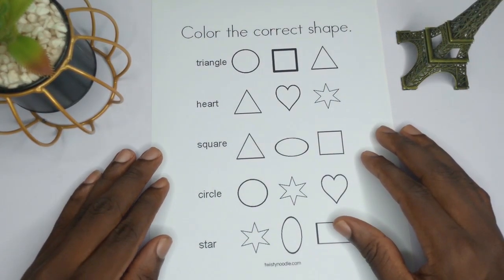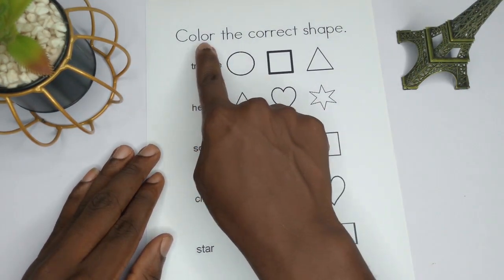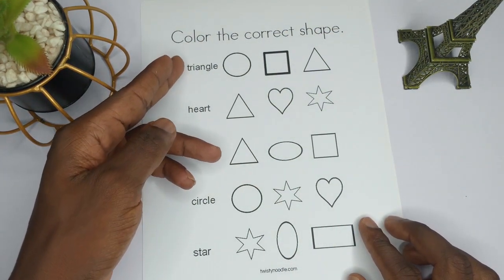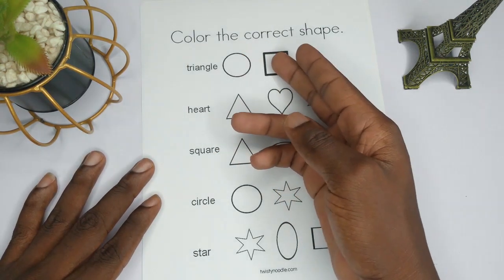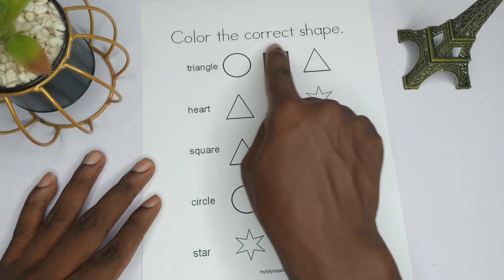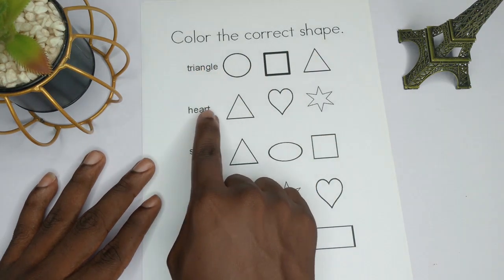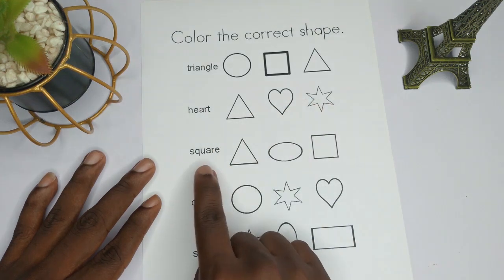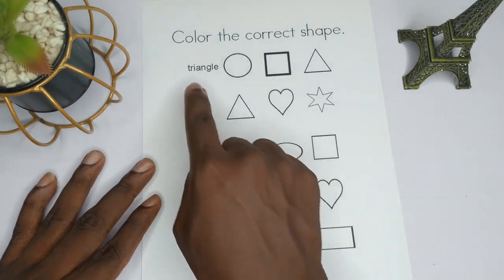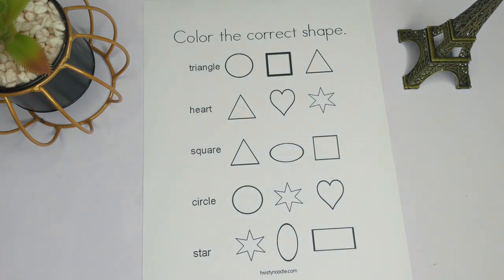Hello and welcome to my science tutorial for kids. In today's video we want to look at this exercise where we are to color the correct shape. We have the names of some shapes, and three options given to us. We have to identify which shape matches the name written, and then color it. If you go through this exercise you will learn the shapes, the names of the shapes, and how they look, as well as practice how to color shapes.